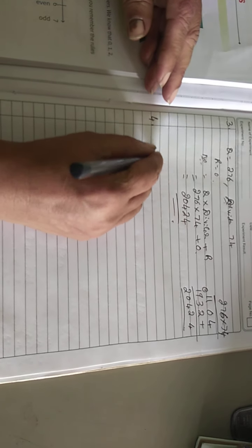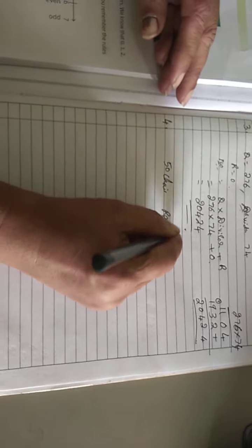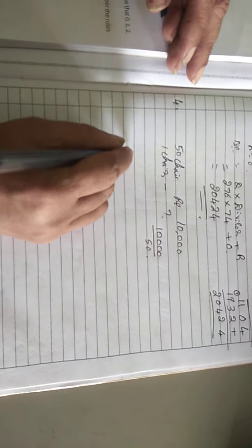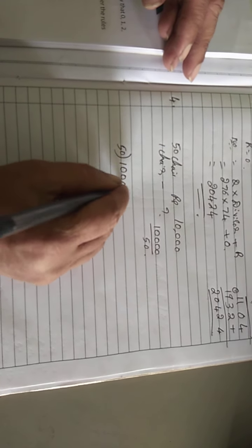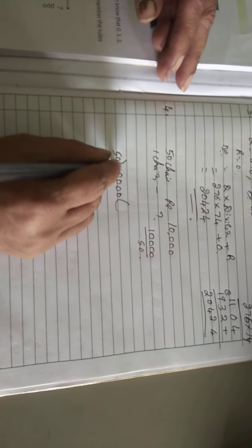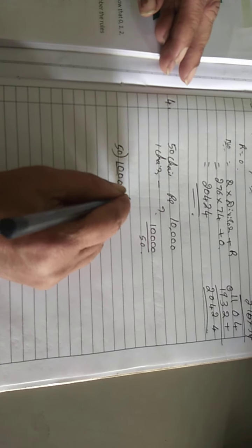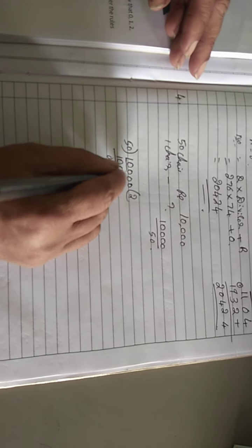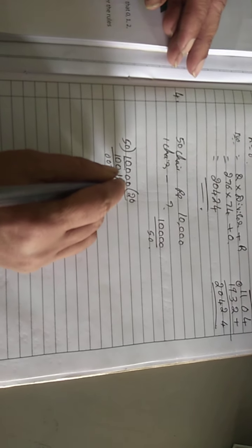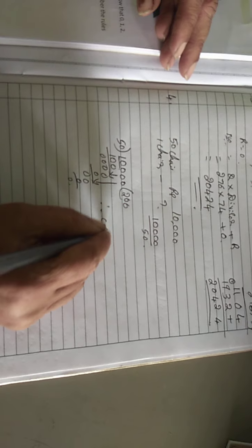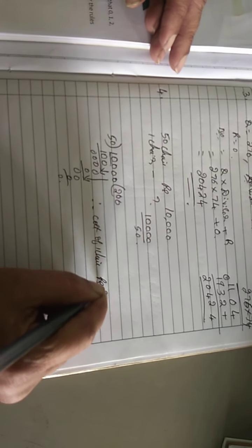Fourth one: 50 chairs cost Rs. 10,000. What is the cost of each chair? So 50 chairs cost Rs. 10,000; one chair we don't know. So 10,000 divided by 50. I will take 3 digits — 100 — because if I take 2 digits it's just 10, not possible. 50 2's are 100. Remainder 0, take 0, 50 0's are 0, take another 0, 50 0's are 0. Therefore cost of 1 chair is Rs. 200.